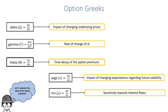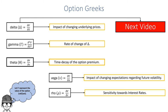And finally we have rho, which is not as commonly used as the aforementioned Greeks. It captures the sensitivity of the option price with respect to changes in the interest rate. In the following videos we will discuss these Greeks in more detail, and for the next video we will discuss delta in more detail. Stay tuned.